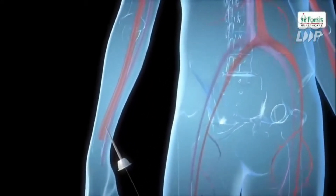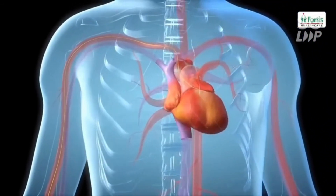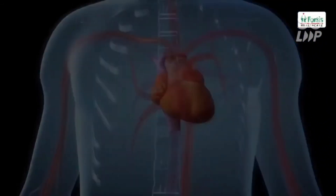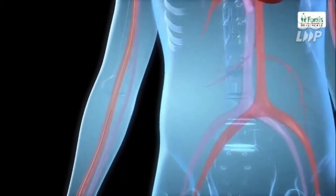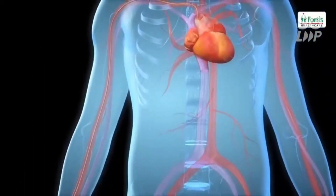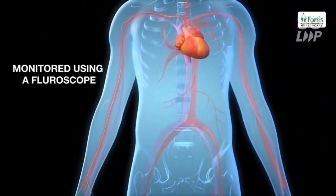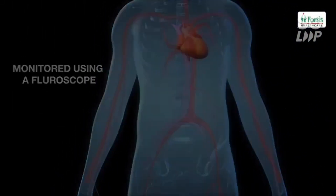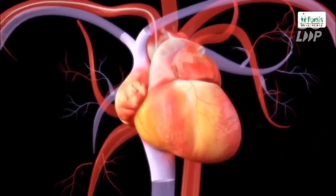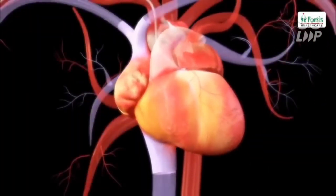A guard wire is then passed through the needle and is guided through the arterial system up to the heart. A flexible catheter is slipped over the wire and threaded up to the heart. This is monitored using a continuous x-ray imaging device called a fluoroscope. The guard wire is then removed and the tip of the catheter is positioned to enter the coronary artery.